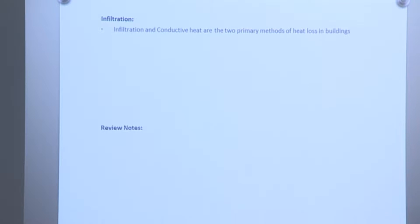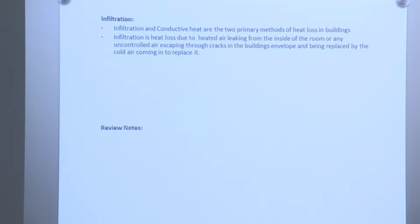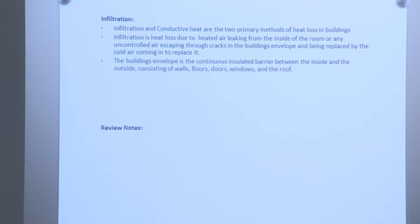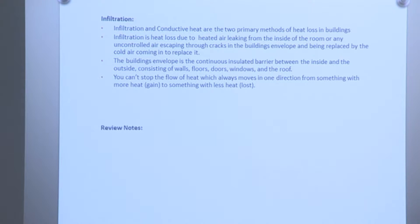Infiltration and conductive heat are two primary methods of heat loss in buildings. Infiltration is heat loss due to hot air leakage from inside the room, or any uncontrolled air escaping through cracks in the building's envelope and being replaced by cold air coming in to replace it. The building's envelope is a continuous insulated barrier between the inside and the outside, consisting of walls, floors, doors, windows, and the roof.